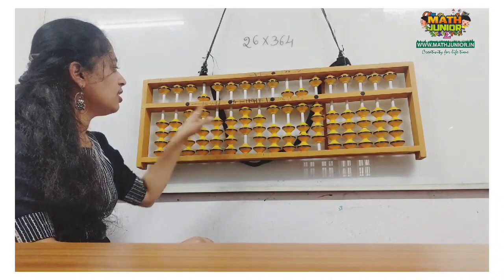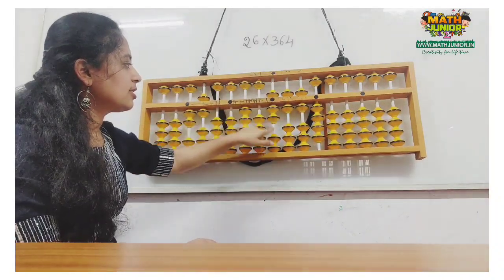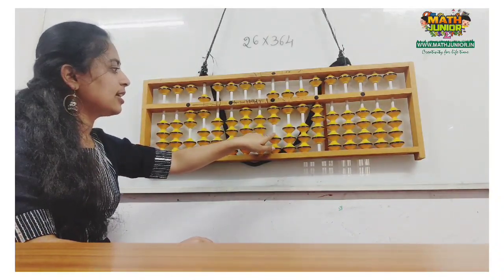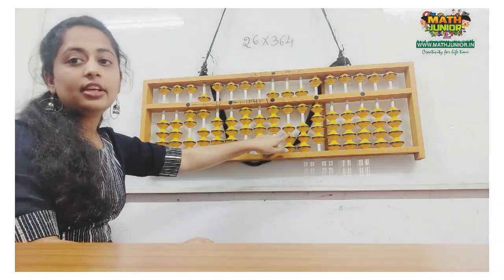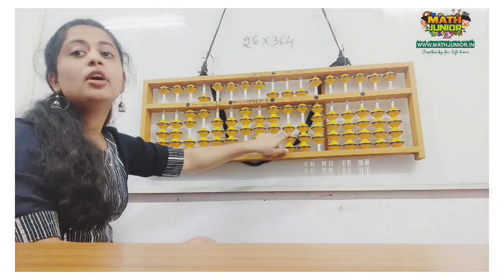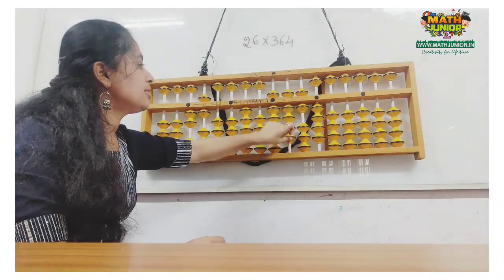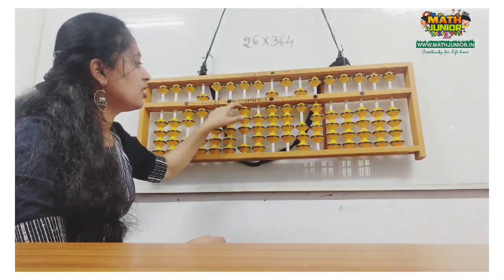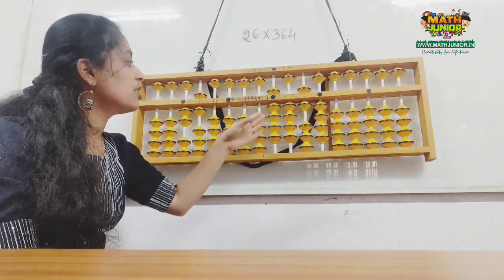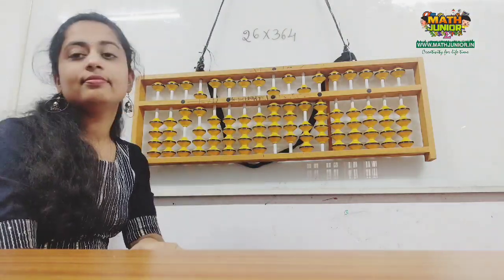Next number is 3. 3 twos are 6. Add 6 directly. Next, 3 sixes are 18. I cannot add 18 directly. So, you can make use of plus-minus complement: plus 3 minus 5 plus 10. The answer is 9464.